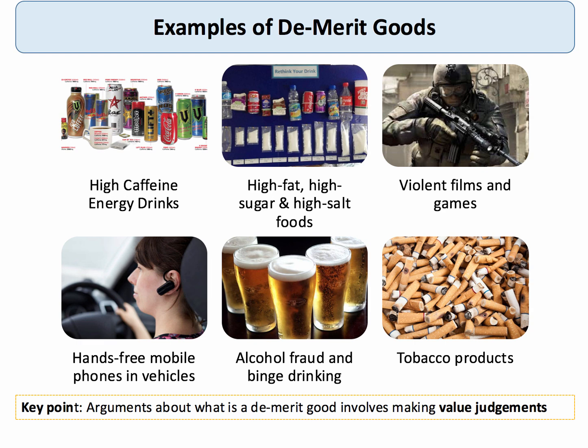Other contemporary examples include the economic consequences of increased consumption of high fat, high sugar, and high salt foods; whether consumption of violent films and computer games is a demerit good; whether driving hands-free on a mobile is a merit or demerit good; and the economics of alcohol, binge drinking, and tobacco.